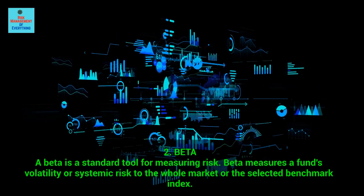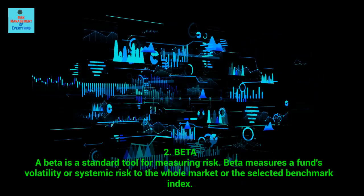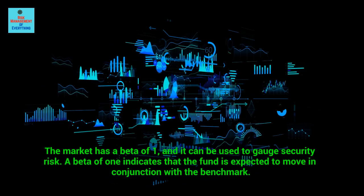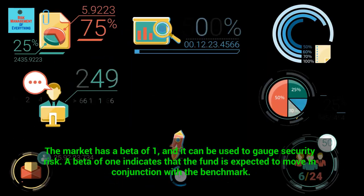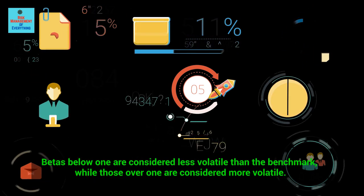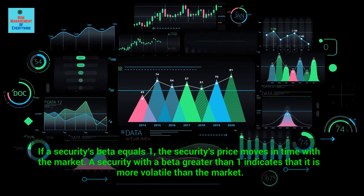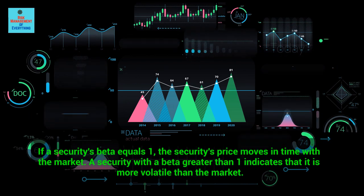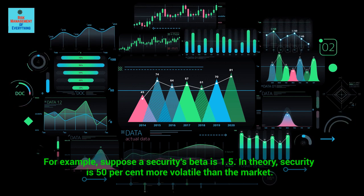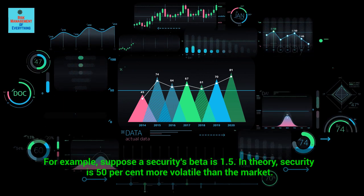Beta is a standard tool for measuring risk. Beta measures a fund's volatility or systemic risk relative to the whole market or the selected benchmark index. The market has a beta of 1. A beta of 1 indicates that the fund is expected to move in conjunction with the benchmark. Betas below 1 are considered less volatile than the benchmark, while those over 1 are considered more volatile. For example, suppose a security's beta is 1.5 — in theory, the security is 50% more volatile than the market.